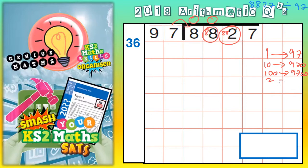2 lots is 194. If you couldn't do that in your head, you'd have to quickly do 97 times 2. 2 sevens are 14. 2 nines are 18 plus 1 is 19. So yeah, 194.